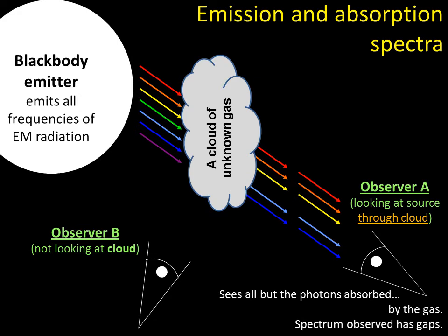So Observer B is now looking at the cloud. Well, that cloud has grabbed some green and purple photons, and those electrons have got excited, gone up their energy levels, and they're dropping back down. And they have to get rid of all the energy they've got, and the only way they can get rid of it is as photons.